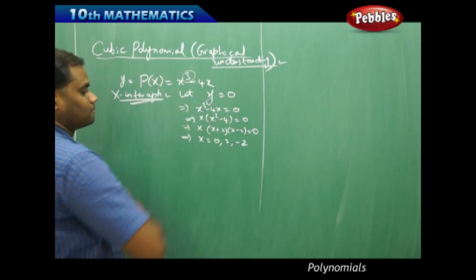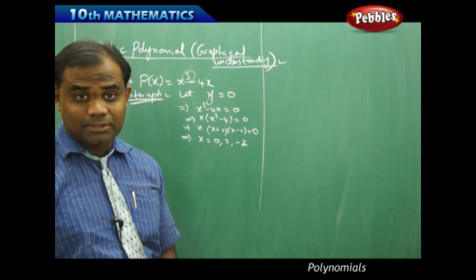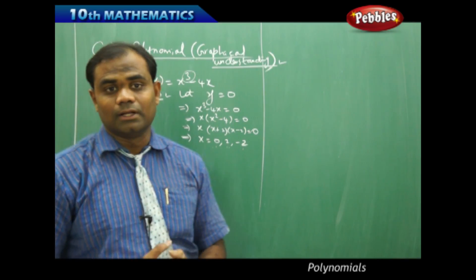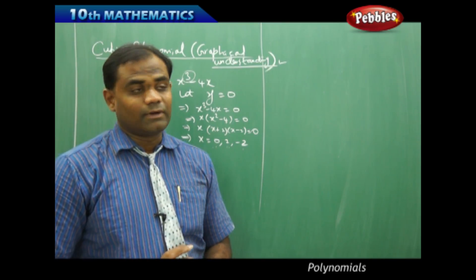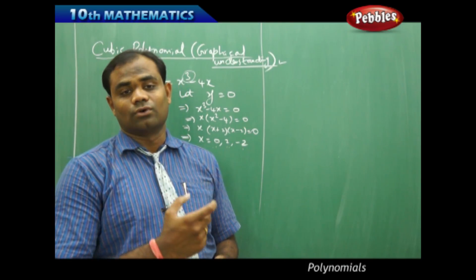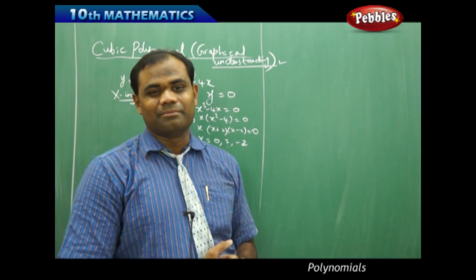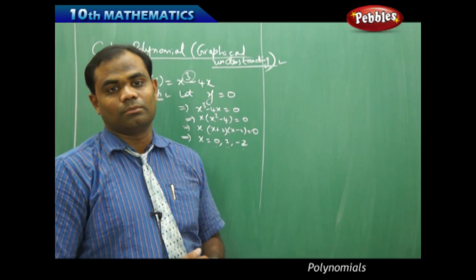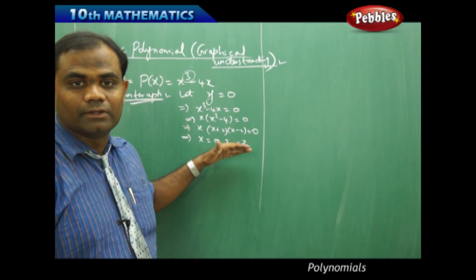Since the degree is 3, I have got 3 x-intercepts. The highest power, which is the degree of the cubic polynomial, will at most lead to only 3 x-intercepts. If I had the highest power as 7, then at most I could have only 7 zeros or roots of the given polynomial. So the number of roots of a polynomial cannot exceed the degree of the polynomial.